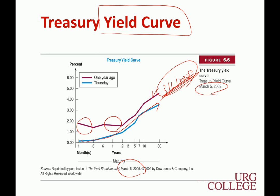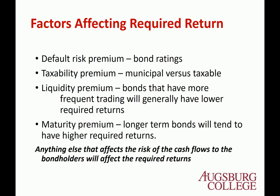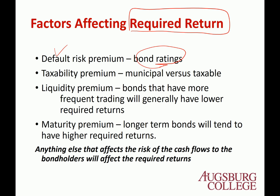You can actually find the daily yield curve in the Wall Street Journal all the time. So, what factors may affect the required returns? First is default risk — this is based on the bond rating. Think about AAA versus BB: you require higher returns for the lower-rated bond.